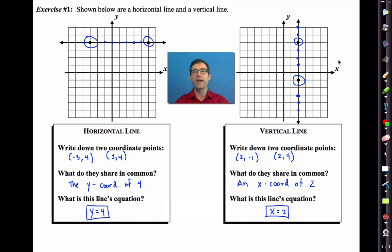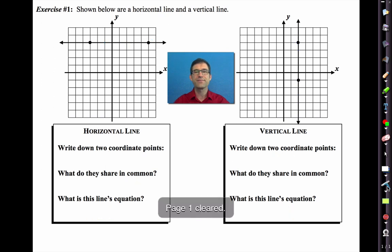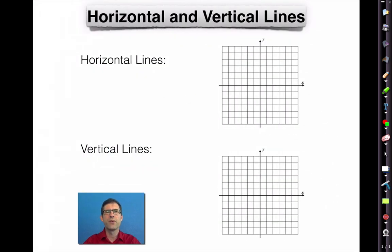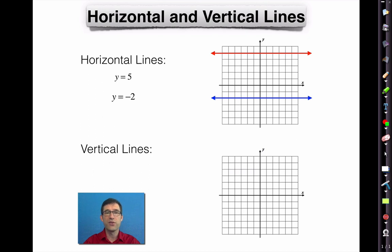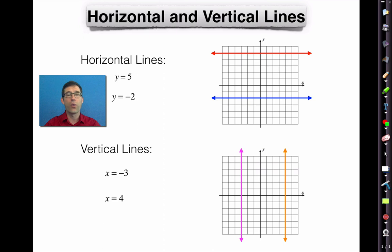Let's summarize. Horizontal lines are characterized by the fact that all of their y-coordinates are the same. Everywhere along that red line the y-coordinate is five, so its equation is y equals five. Every point along that blue line has a y-coordinate of negative two, so its equation is y equals negative two. Every point along the pink vertical line has an x-coordinate of negative three, so its equation is x equals negative three. Any point along the orange line has an x-coordinate of four, so its equation is x equals four.